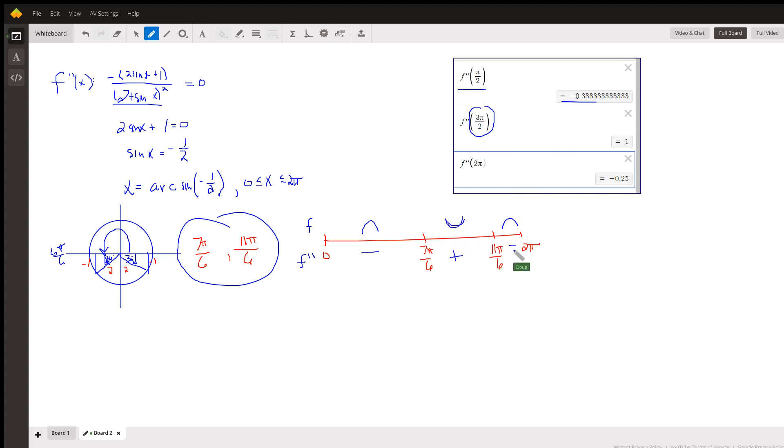And to the right of 11π over 6, I happen to use 2π. We get a negative number, so everywhere on this interval to the right of 11π over 6, the second derivative is negative. Concavity changes, so these are the x coordinates of points of inflection.